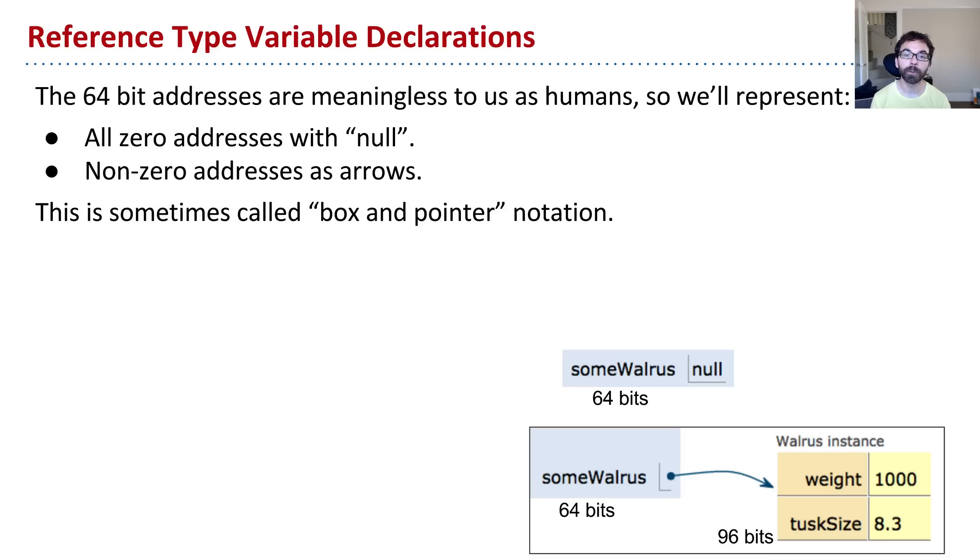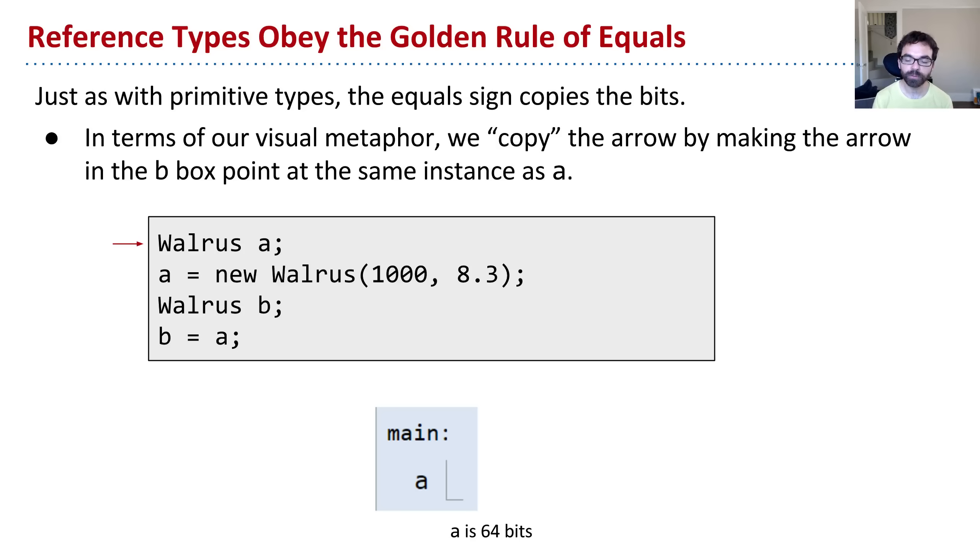You may not realize it, but you now know everything you need to solve the mystery of the walrus. So I mentioned the golden rule of equals, that equals just copies the bits. That's all it does. Now that's true for primitive types, but it actually is also true for reference types. And in fact, for any situation in Java where you say equals. So in terms of our visual metaphor, what that means is we're going to copy the arrow by making, if we say, for example, b equals a, we're going to make the arrow in the b box point at the same instance as a. So let's see that in terms of box and pointer notation.